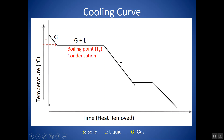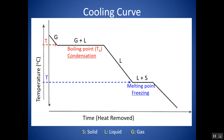The temperature continues to decrease until it reaches back to the melting point — or you could call it the freezing point — which is the same temperature, just a different direction. Rather than going from solid to liquid, it's going from liquid to solid. These are actually the same temperatures as on the heating curve. That's why for water, the melting point is 0°C or 32°F, and that's also the freezing point.